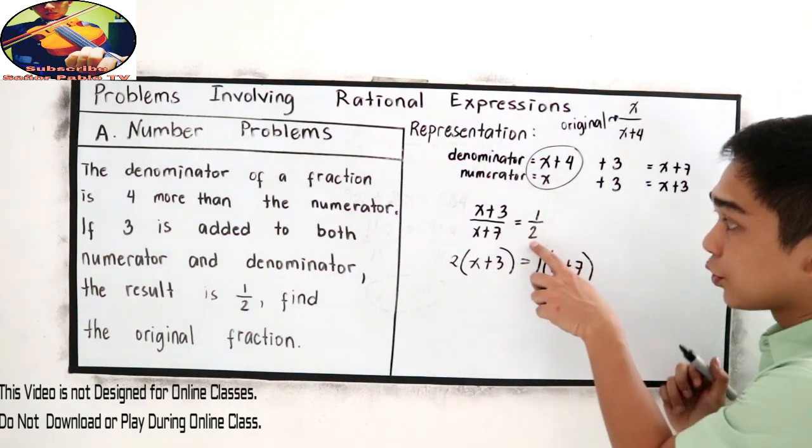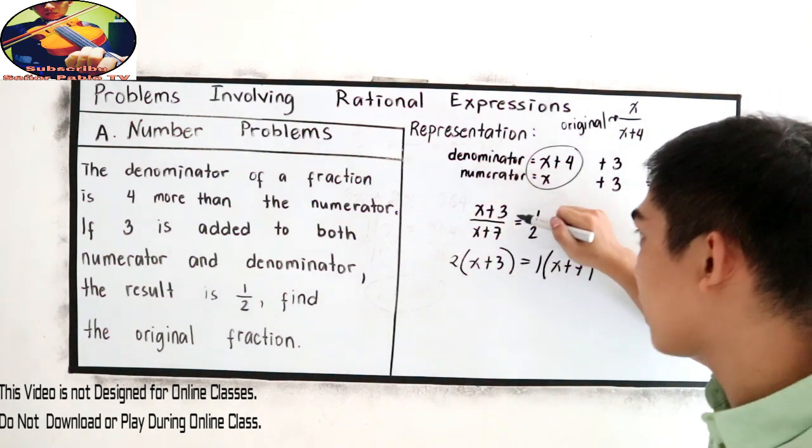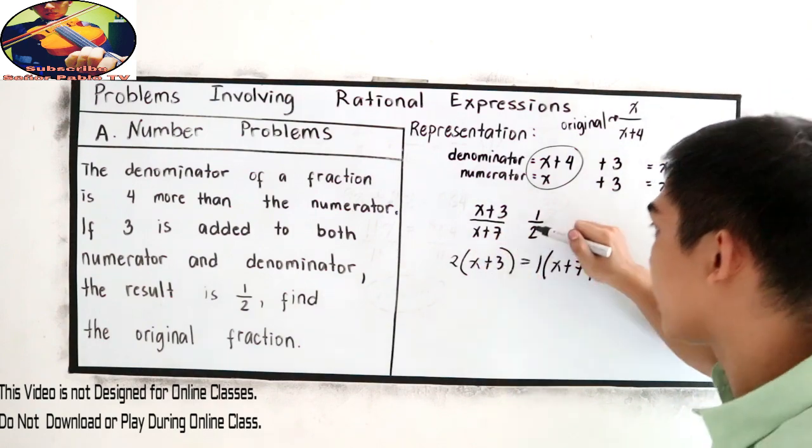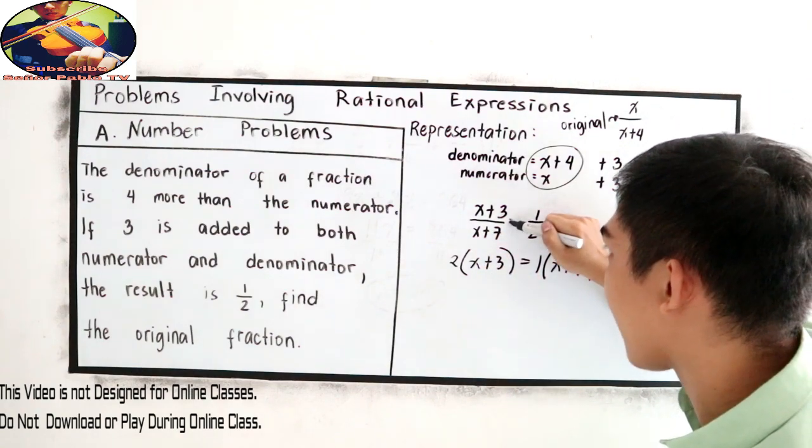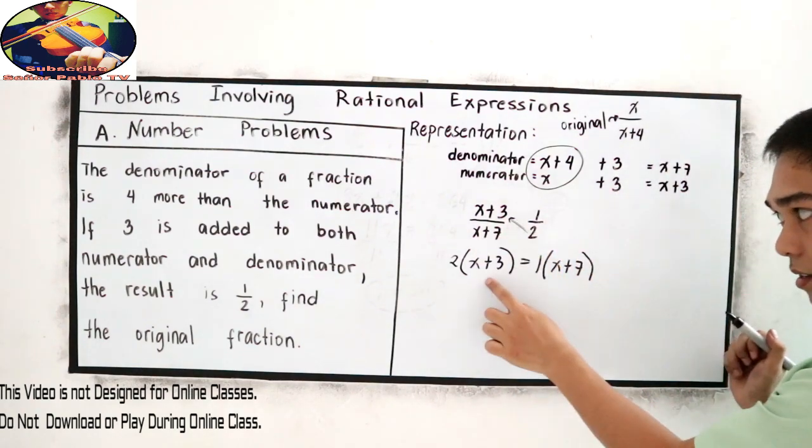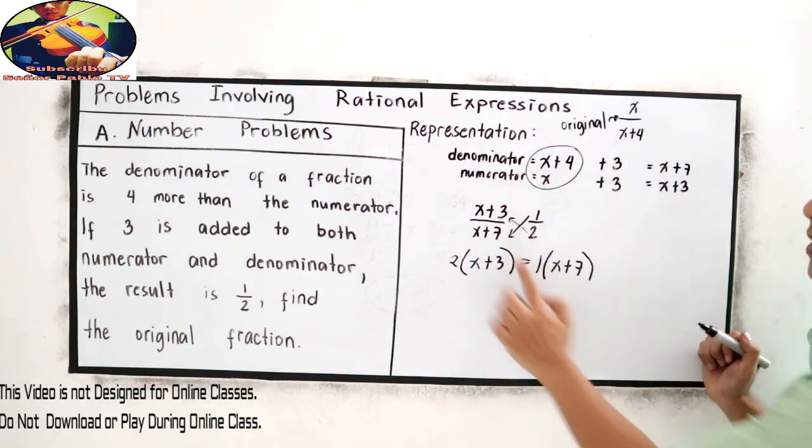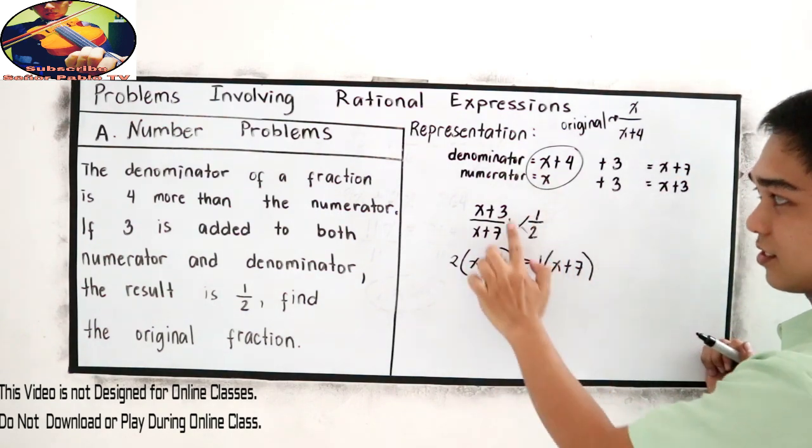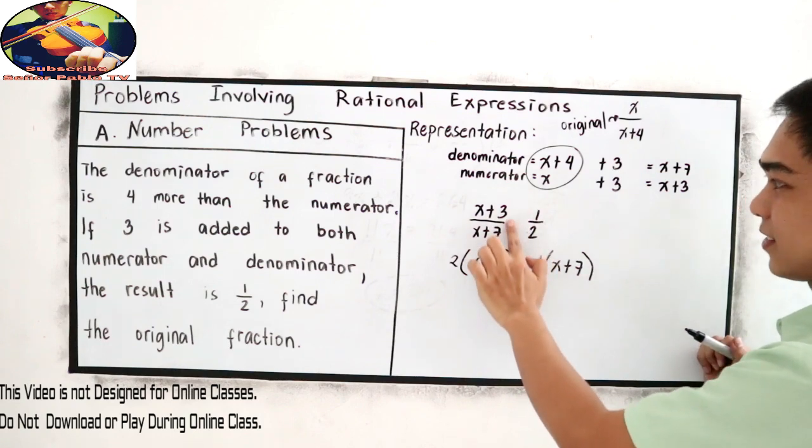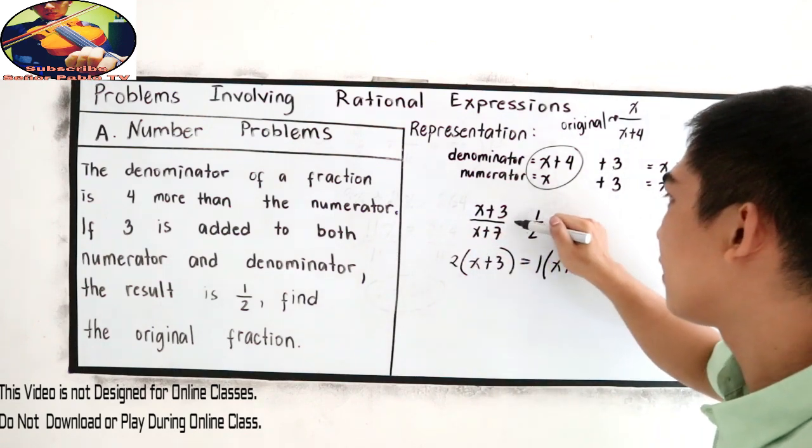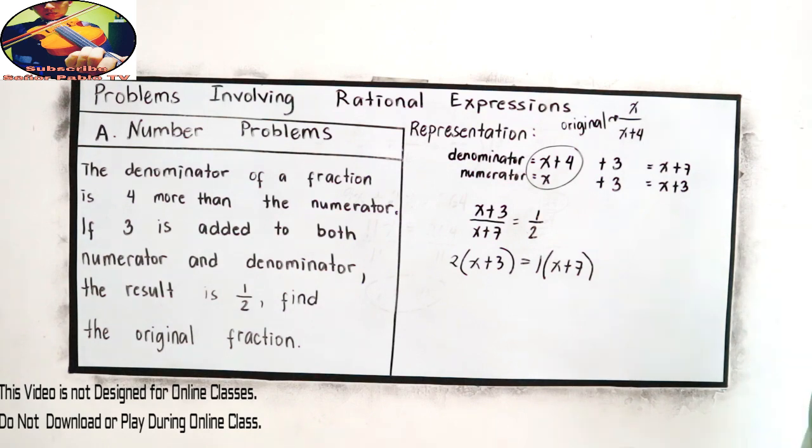Let us repeat. Two times x plus three. That's why it's cross because we're going to do this one. Two times x plus three and one times x plus seven. Now simplify.